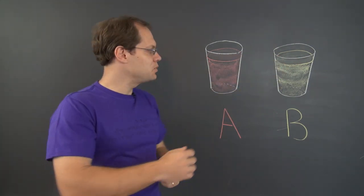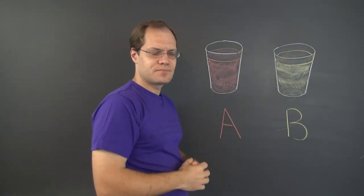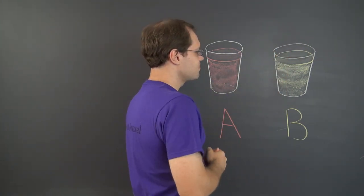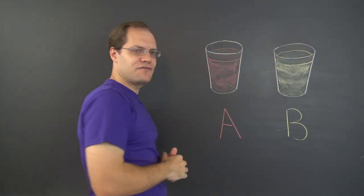Now you take a spoonful from the first cup of liquid A, and you put it in the second cup. You mix it up real good, and then you take a spoonful of the mixture, and you put it back in the first cup.